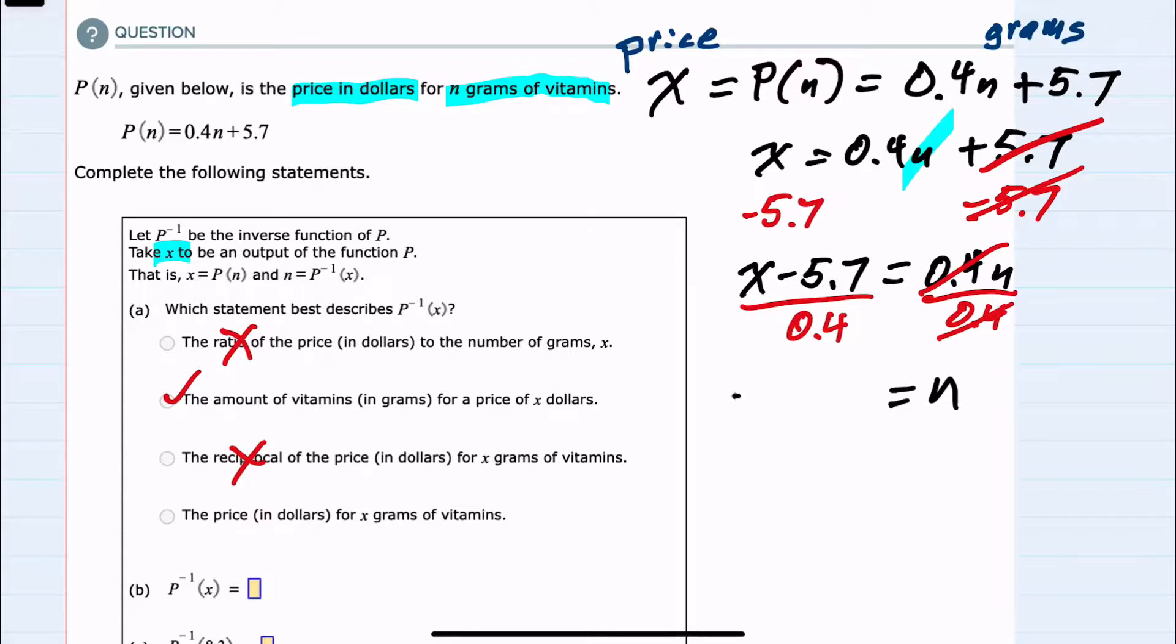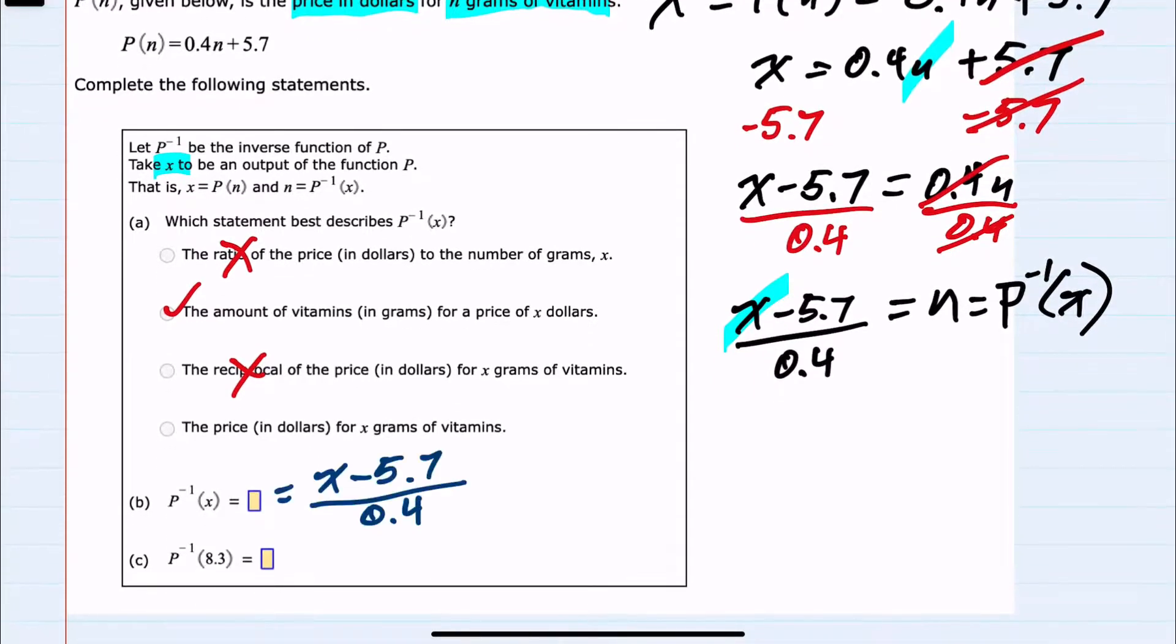The left-hand side is x minus 5.7 over 0.4. This n is our new inverse function, and it is a function of x instead of a function of n because we can put in the price x, and the output will be the number of grams of vitamins at that price. So our inverse function is x minus 5.7 over 0.4.